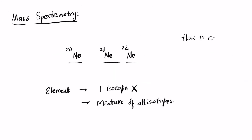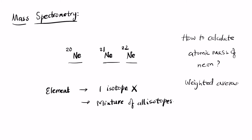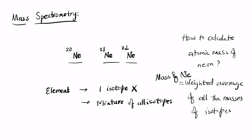To calculate the atomic mass of neon, we take the weighted average of all the isotope masses. Rather than choosing one single atom to have a specific mass, we choose the weighted average — and that weighted average is what you see in the periodic table as the atomic mass. Let's take an example and calculate the atomic mass for a given element.